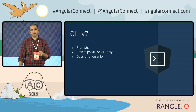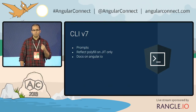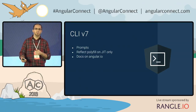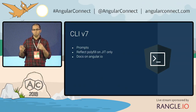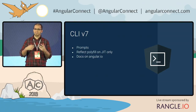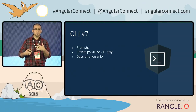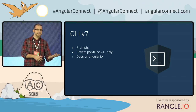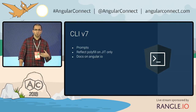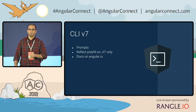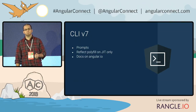Then we put the docs on Angular.io. This has been a bit of a pain point. Our documentation has traditionally been on the CLI repo inside the wiki, and it's not very clear that it's there. People go to Angular.io and they want to know what these commands do. They can now know this. We'll be migrating more and more documentation there, but for now the commands are there.